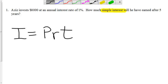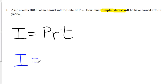So let's identify the parts of this formula. I is equal to the amount of interest earned.